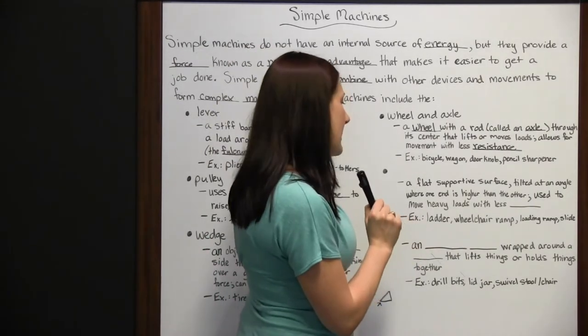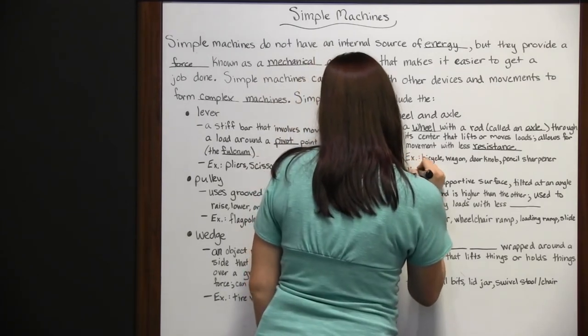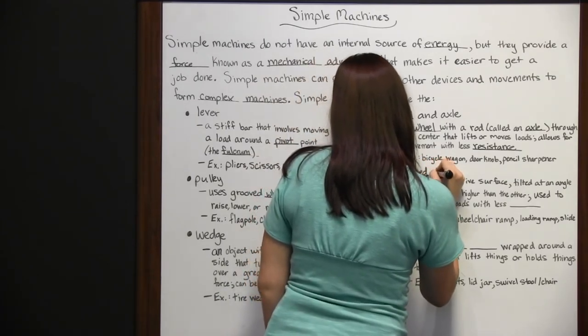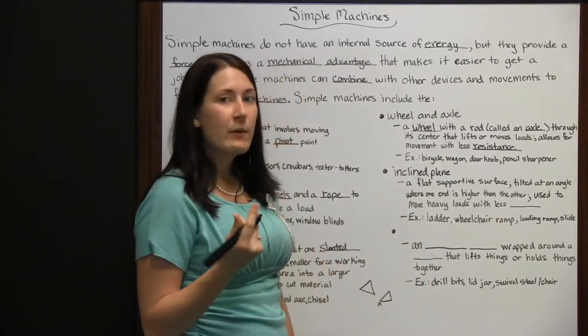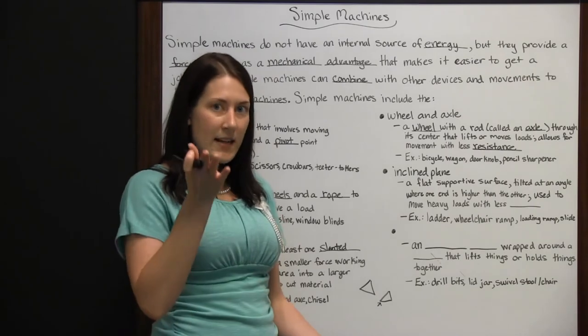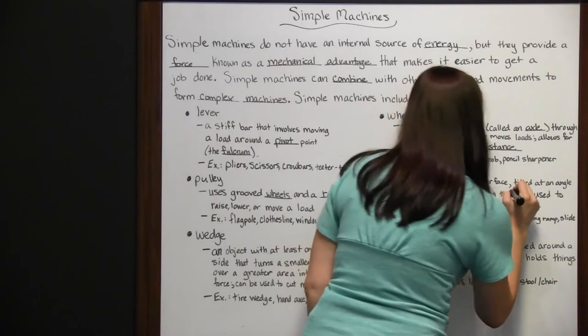Another simple machine is our inclined plane. The inclined plane is a flat, supportive surface that's going to be tilted at an angle where one side is higher and one side is lower. It's used to move heavy loads with less force.